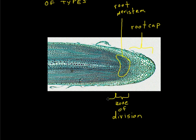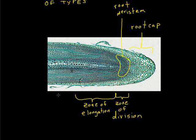Just behind the zone of division, we have what is known as the zone of elongation. In this zone we don't have as much division going on so much as we have an enlargement of the cells. The nuclei are much more densely packed near the division zone than further back, and the cells are becoming longer — that's why it's called the zone of elongation.